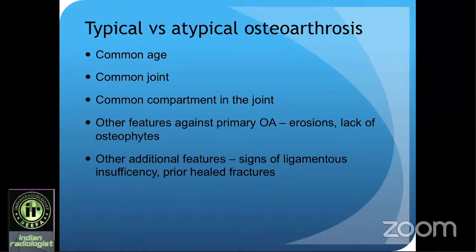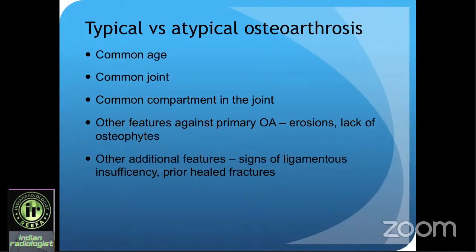Whenever you get an X-ray, the first thing to consider is whether this is typical degenerative osteoarthrosis or atypical OA due to some other reason. Run these questions in your mind: Is this a common age for OA? A 60-plus patient with OA — yes, that's common. A 30-year-old with OA — your antenna should go up. Is this a common joint for OA? Hip and knee are common weight-bearing joints; OA in the shoulder or elbow is not common and is likely secondary to rotator cuff tear or posterolateral instability.